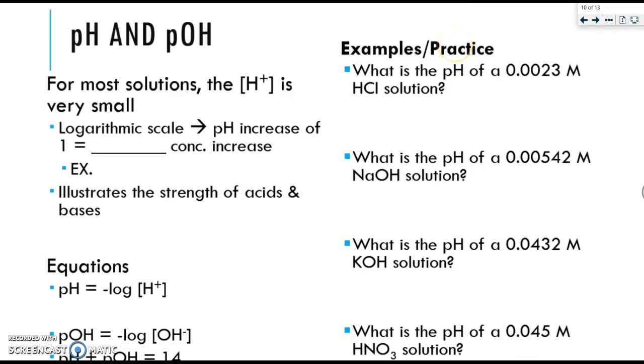Let's continue. We're now going to talk about pH and pOH. So for most solutions, the H plus concentration is very small. Because of that, the pH scale was developed. It is a logarithmic scale. So a pH increase of 1 equals a 10 times concentration increase. For example, if I go from a pH of 4 down to a pH of 2, that's a change in 2, I'm actually 100 times more acidic. Because 10 to the second is 100. So this scale is used to illustrate and tell us how strong an acid or a base is. The lower the pH, the stronger the acid. The higher the pH, the stronger the base.